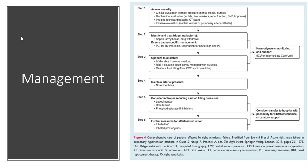Moving on to management: a step-by-step process from the AHA guidelines begins with clinical evaluation — blood pressure, mental status, fluid balance. Then biochemical evaluation — lactate, liver enzymes, renal function, BNP, and troponins. Next, imaging — POCUS findings or CT scan if concerned about pulmonary embolus. And invasive evaluation — central venous gases or pulmonary artery catheterization to assess hemodynamic variables.